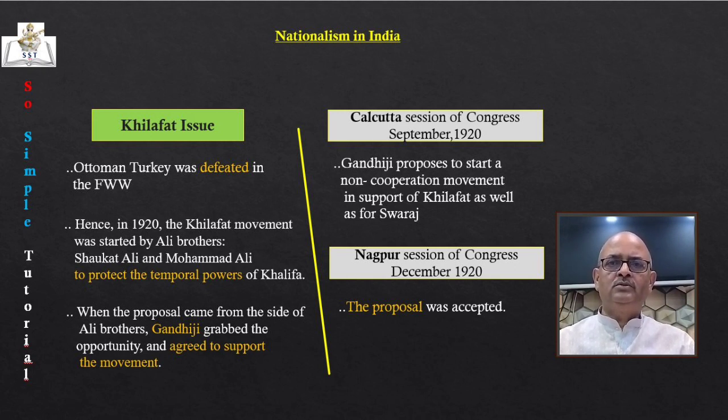The salt march marked the beginning of the Civil Disobedience Movement. Thousands of people broke the salt law across the country. People demonstrated in front of government salt factories. Foreign cloth was boycotted. Peasants refused to pay revenue and chowkidari tax. Village officials resigned. Tribal people violated forest laws. The colonial government began arresting Congress leaders.